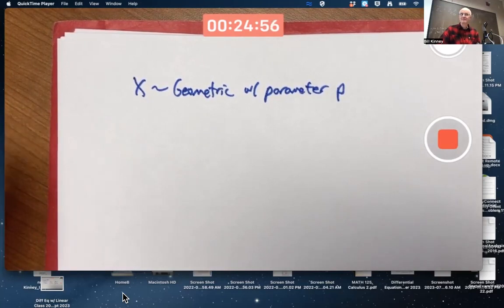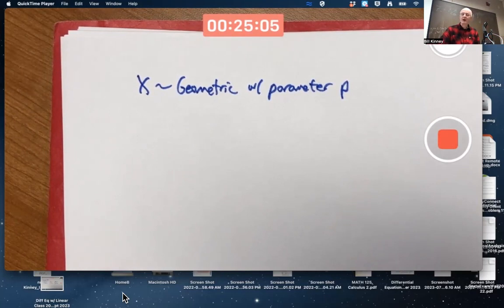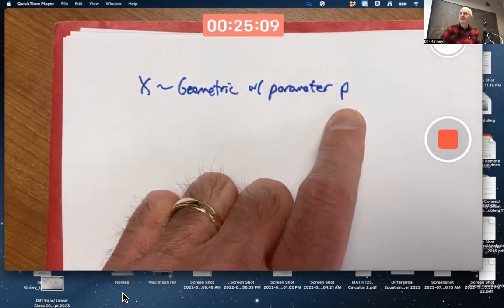Do you remember what geometric represents? Number of trials until the first success? Yeah. When you've got, again, the assumption is independent trials that are identical with same probability of success p on each trial.